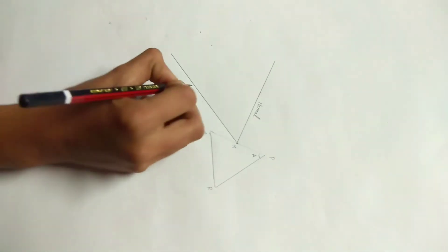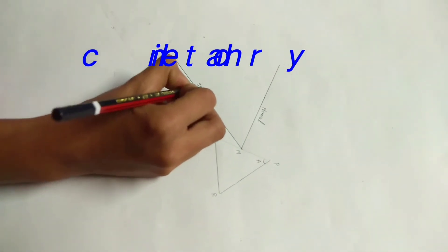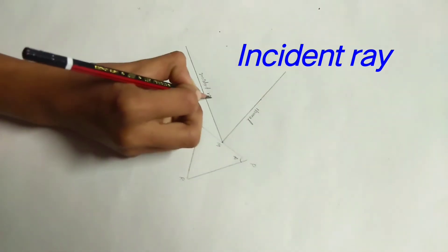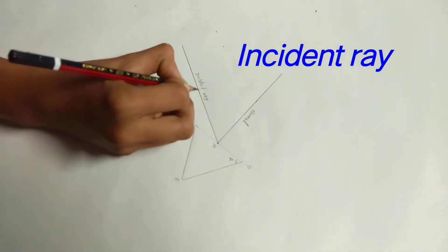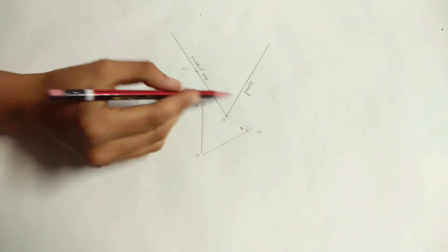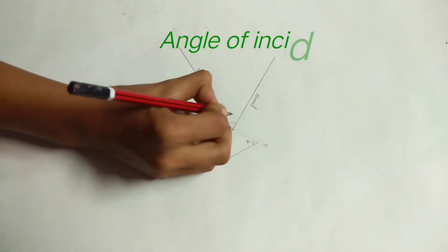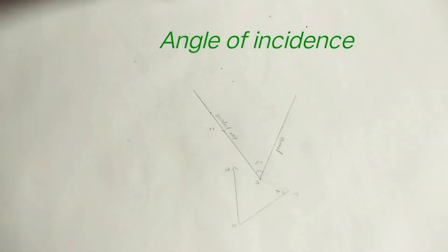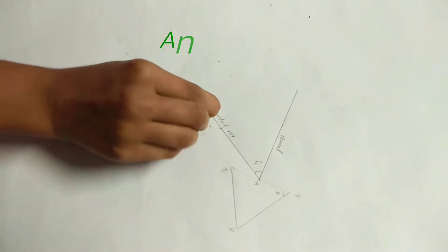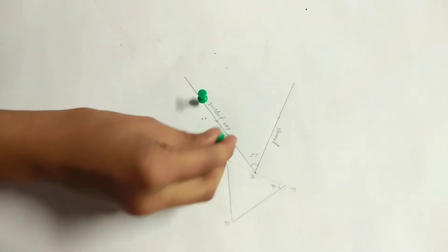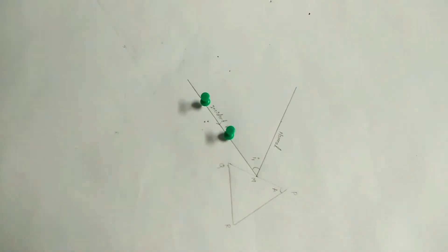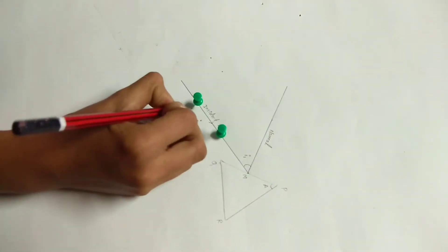This line denotes the incident ray. Draw a small arrow on it. Now, the angle between normal and incident ray is angle of incidence which is denoted by I1. Fix two pins vertically on incident ray and mark the points A and B.